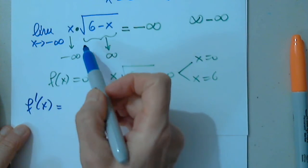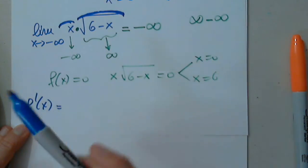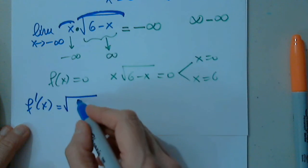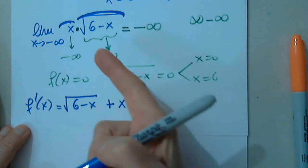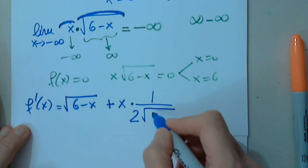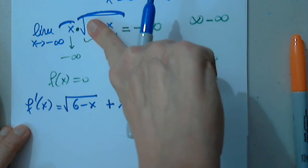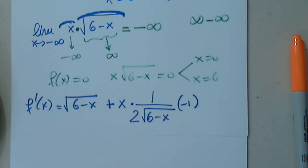Now I look at the first derivative. Remember this is a product: function one is x and function two is the square root of 6 minus x. So f'(x) = (1)(√(6−x)) + (x)(1/(2√(6−x)))(−1), applying the product rule with the chain rule on the second term.